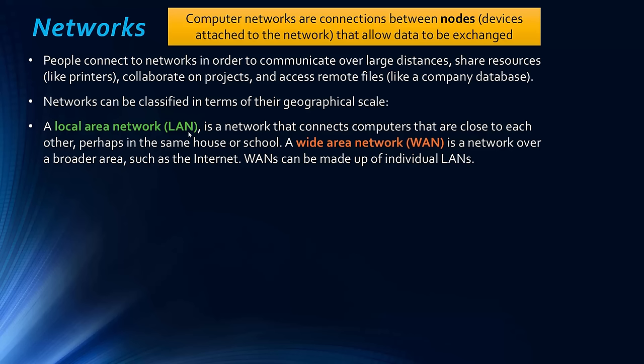A wider network is a wide area network, or WAN, spread over a broader area. At the larger scale we have the internet, which is a worldwide network and the focus of the next topic. The internet is a network of networks, which means a WAN can be made up of individual LANs.